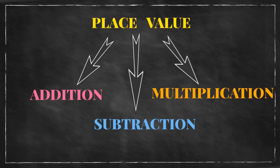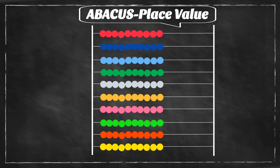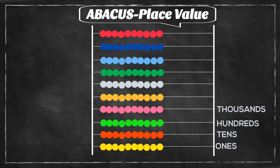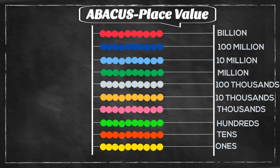In abacus, the first row shows the place of ones, then tens, then hundreds, then thousands, then ten thousands, then hundred thousands, then millions, then ten millions, then hundred millions, and finally billions. So kids can practice numbers up to millions using the abacus.